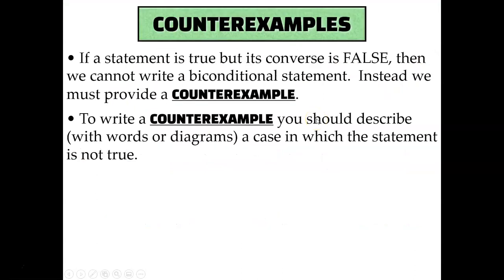But what if the converse is false? That's what a counterexample is for. Unlike biconditional statements, counterexamples don't have a specific form they have to be written in. Basically, a counterexample is just 'prove me wrong' — show me an example of how what I just said isn't true. It could be words or diagrams, as long as you're describing a situation in which the converse is false.